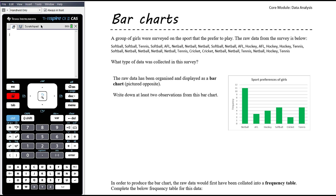We have a group of girls surveyed on the sport that they prefer to play. The raw data from the survey is below — just a random list with no clear order to it. You might ask them one at a time: what sport do you like to play?